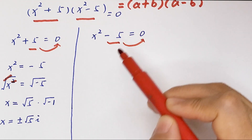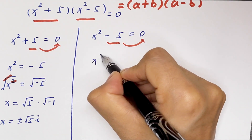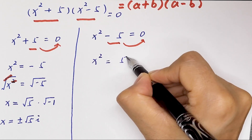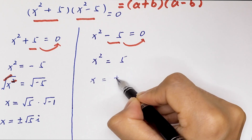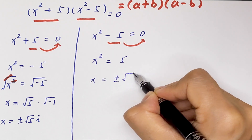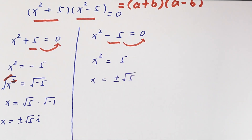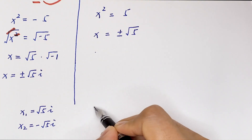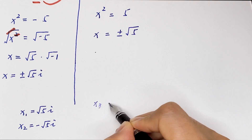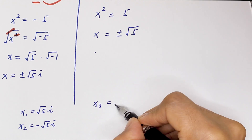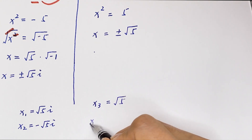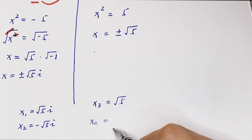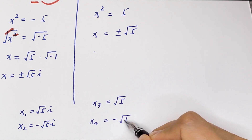From the second case, x squared minus 5 equals 0, so x squared is equal to 5. Taking square roots of both sides, x is equal to plus or minus square root of 5. From here we have two values: x is equal to square root of 5 and x is equal to negative square root of 5.